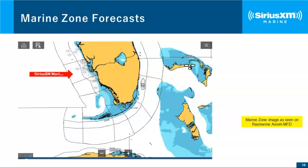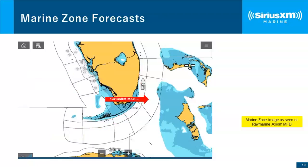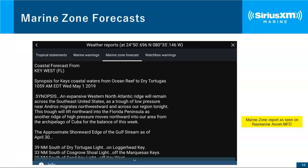For example, with the boat near the Fort Lauderdale/Miami area, if you were cruising around the Gulf Coast, conditions there could certainly be different. All you need to do is click on the zone you're going to or interested in, and it pulls up a full report for that particular zone with forecasts, wind, and waves specific to the zone you chose.